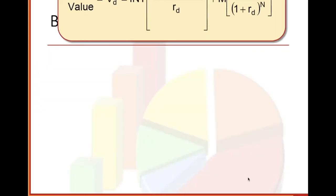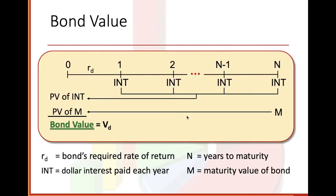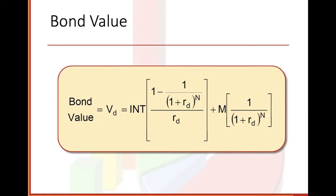Here is the formula: bond value equals INT times [1 minus 1 divided by (1 plus R_D)^N] divided by R_D, plus M times 1 divided by (1 plus R_D)^N. R_D means the bond's required rate of return, and M is the maturity value.